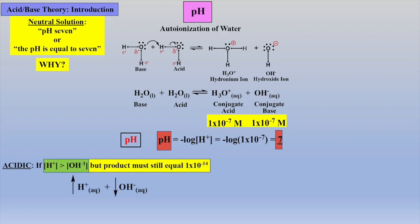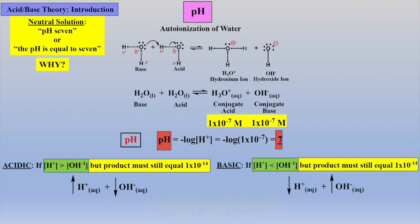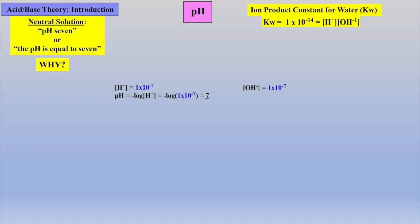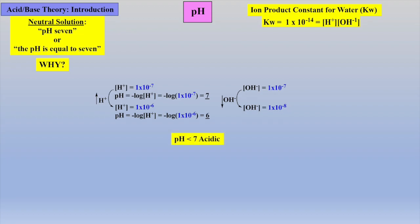Recall previously, we learned that in an acidic solution, the concentration of protons increases, and the concentration of hydroxides decreases, and vice versa for basic solutions. But remember, their product must always equal 1 times 10 to the minus 14, which was the Kw for water. So, let's examine an acidic solution by increasing the concentration of protons to 1 times 10 to the minus 6 molar. Taking the negative log of 1 times 10 to the minus 6 molar affords a pH of 6, which means any pH lower than 7 is acidic.